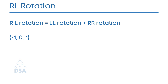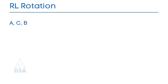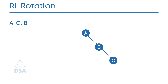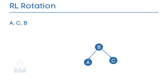Finally, we will discuss RL rotation. RL rotation equals LL rotation plus RR rotation — first LL rotation is performed on the subtree, then RR rotation is performed on the full tree. The full tree means the first node from the path of the inserted node whose balance factor is other than minus 1, 0, or 1. Consider nodes A, C, B to be inserted. After calculating balance factors, A does not satisfy the AVL rule, so we perform RL rotation. First LL rotation is applied, but the balance factor of A remains minus 2, so we then perform RR rotation in anti-clockwise direction. The resulting tree is a balanced binary search tree.